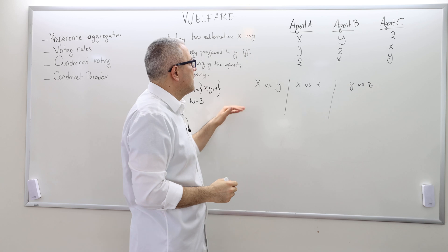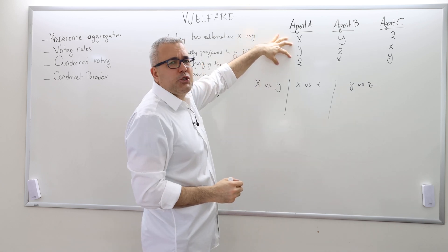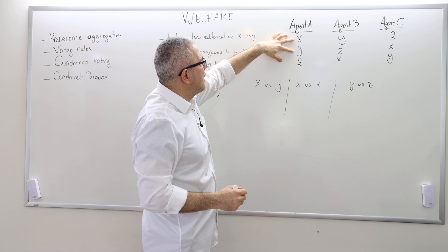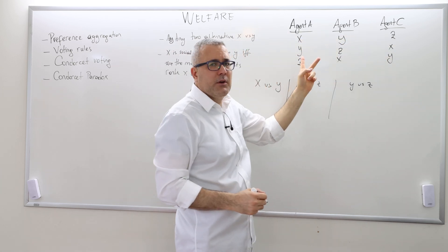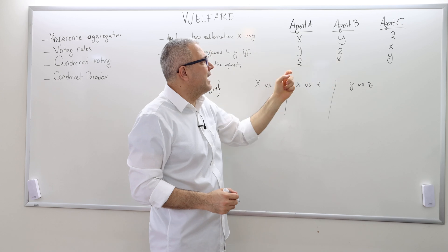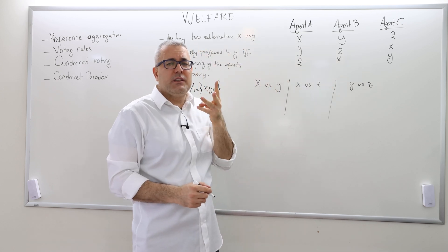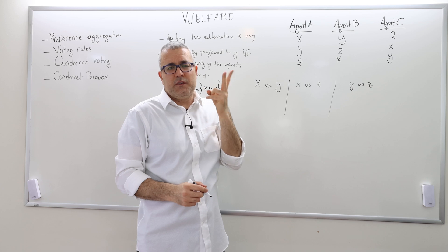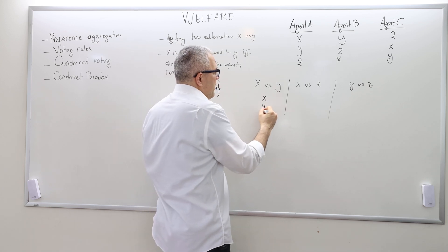As we did in the previous example, so when it comes to X and Y, what is the majority saying? X better than Y, Y better than X, X better than Y. So two people, agent A and C, say X is better than Y. Because the number of agents is three, the majority is two or more. So therefore, socially, X should be above Y.